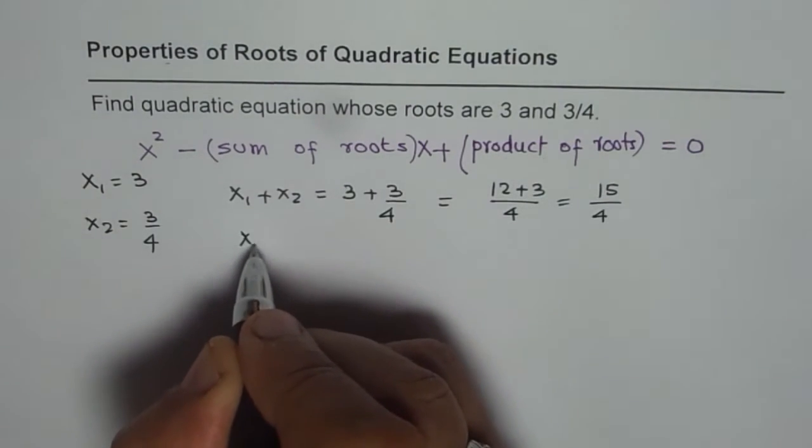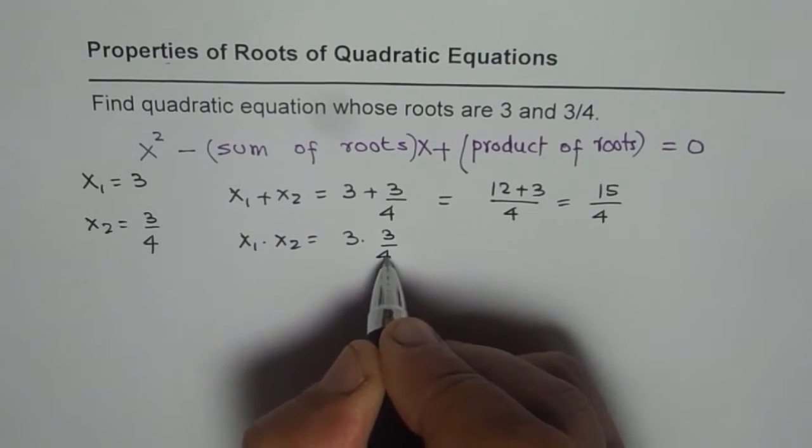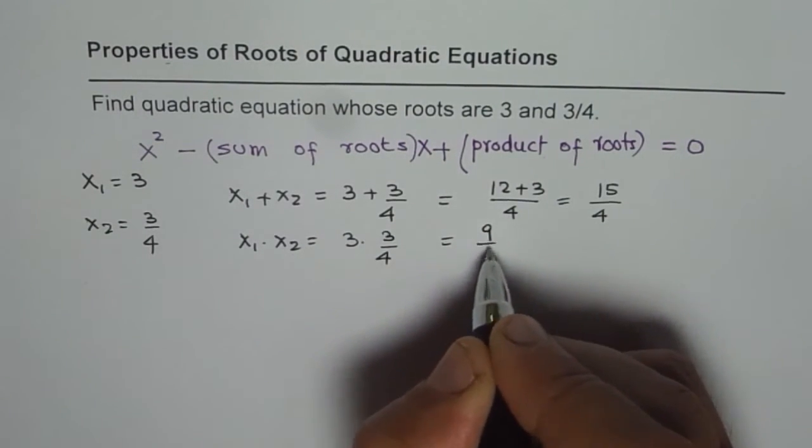And the product is x1 times x2 which is 3 times 3 over 4, 9 over 4.